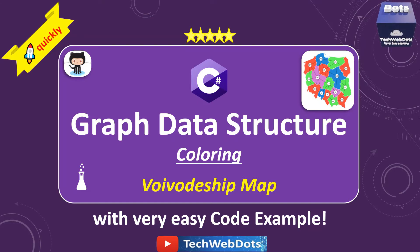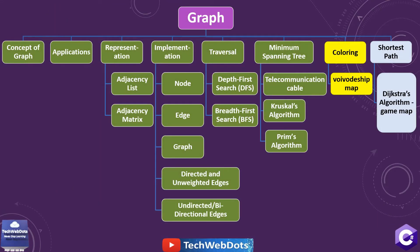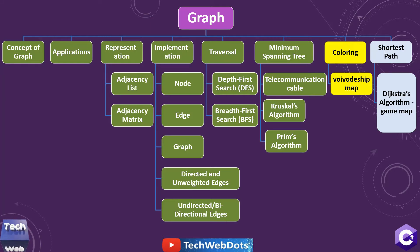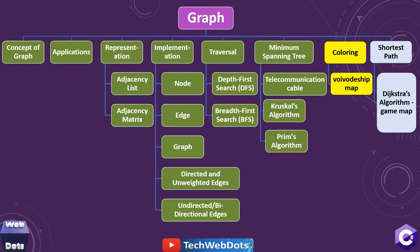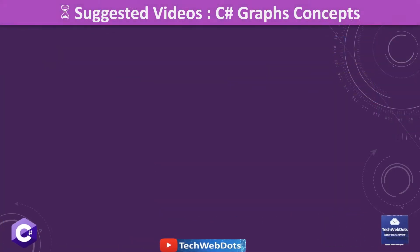As you can see on the screen, all the green parts I have already covered in this graph data structure series, and today we are going to discuss coloring and the voivodeship map. In the upcoming part we will discuss shortest path and Dijkstra's algorithm game map. So let's move ahead without wasting time.